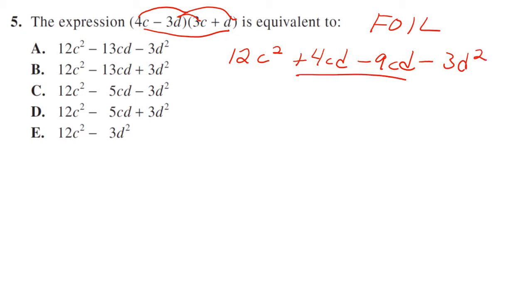So we have 12C squared minus 5Cd minus 3D squared. That's going to be choice C.